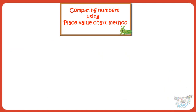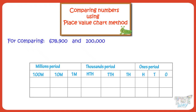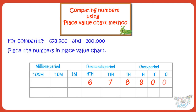Let's take another example. Here again, we have two numbers. Let's compare the numbers. Here is our place value chart. Now let's put the numbers we have in the place value chart, writing each digit under its place in the place value chart. We get it like this.